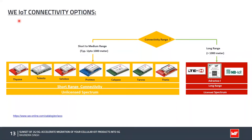Würth Electronics offers multiple IoT connectivity options. They are mainly divided into two parts: short to medium range, typically up to 1,000 meters, using unlicensed spectrum technologies like Bluetooth, Wi-Fi, and some proprietary protocols. On the other hand, for long range — typically more than 1,000 meters — in the licensed spectrum, we have the Adrastea-I cellular module, which supports LTE Cat-M and NB-IoT. For more details you can visit our website and see the complete portfolio we offer in terms of wireless connectivity and sensors.